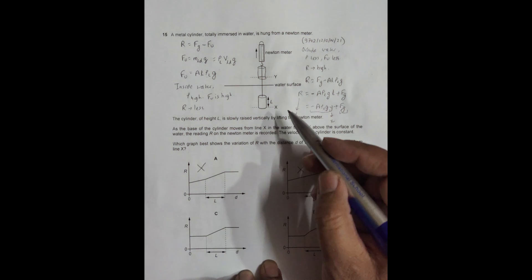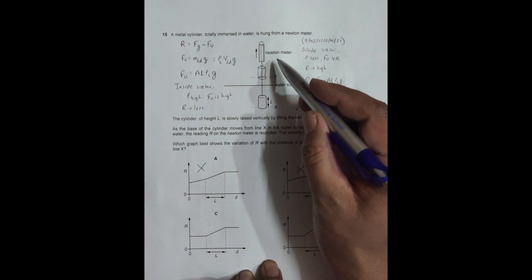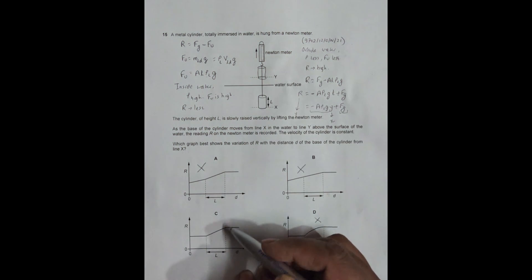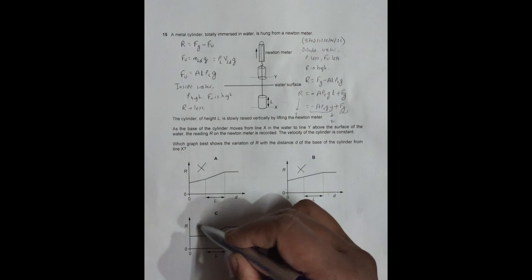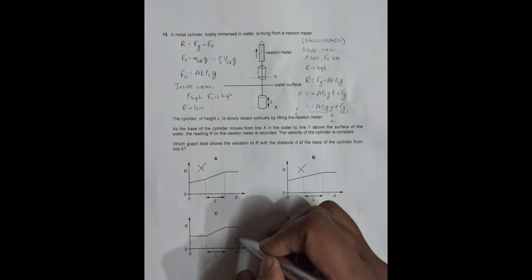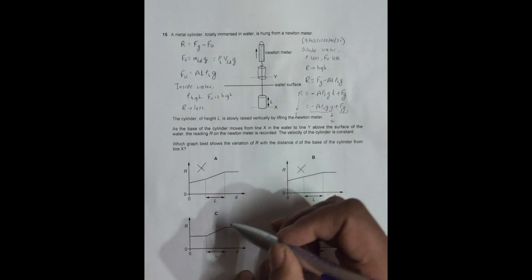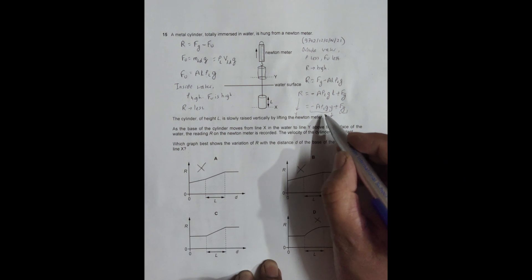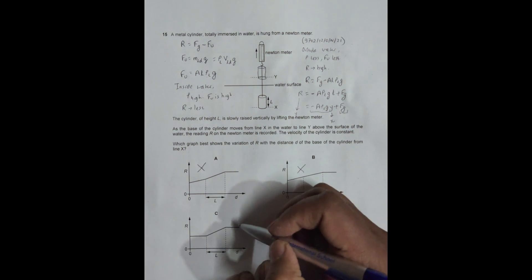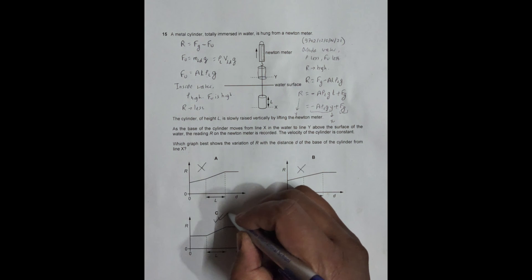This is happening because had we considered measuring it in air first and then taking it inside water, this graph would have reversed. So here we have readings from opposite ways, that's why the slope is negative A×ρ×L×g. So C should be the proper graph for this equation.